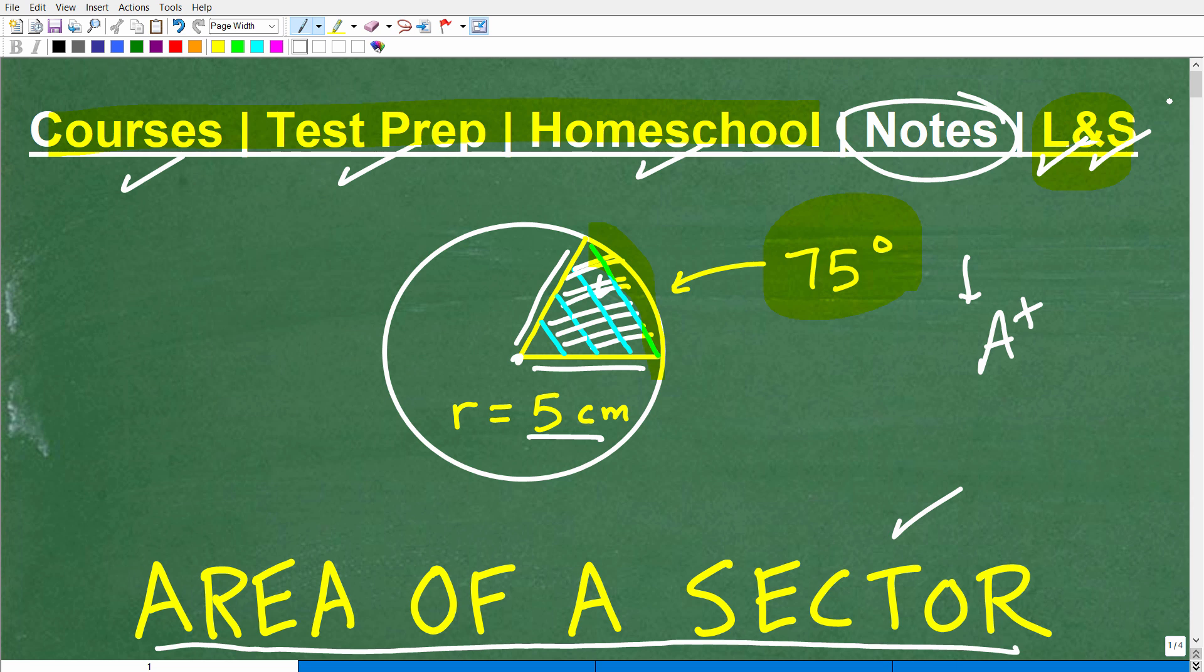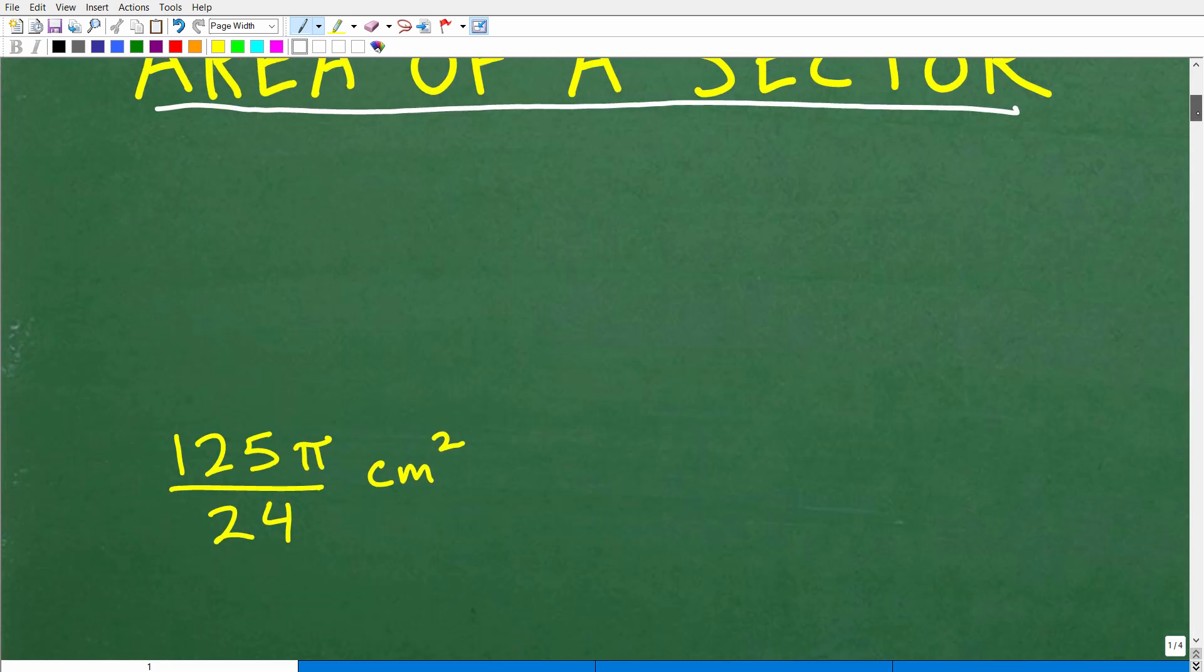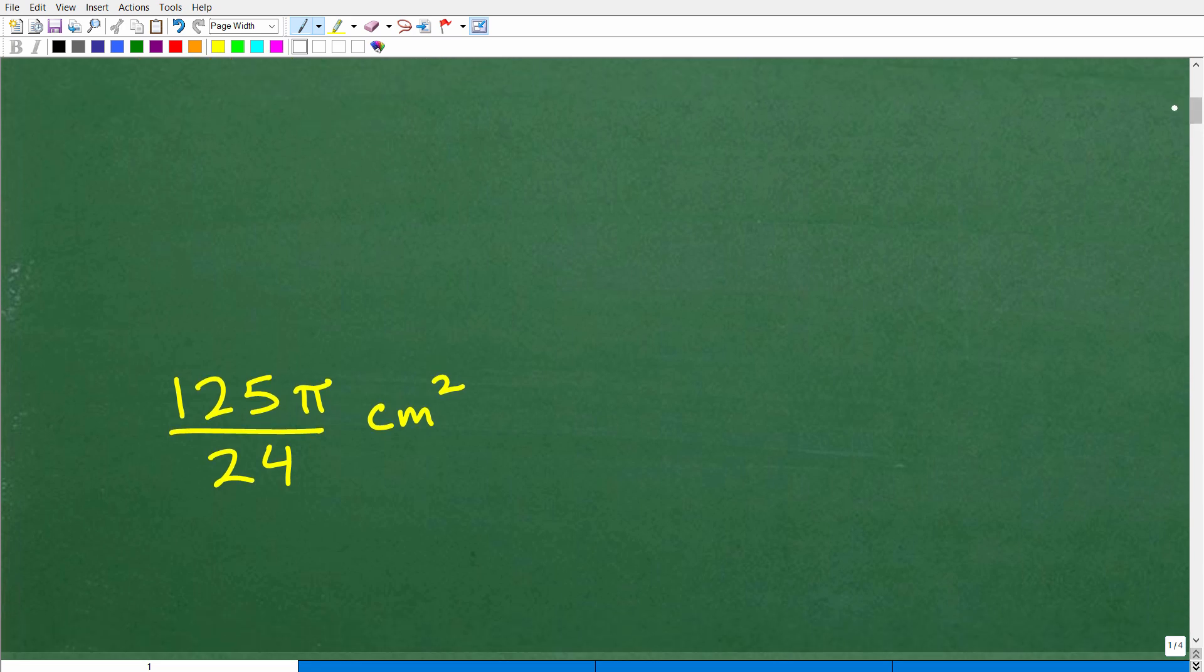Okay so let's take a look at this answer here. We want to find the area of this little pizza slice, which we refer to as a sector of a circle. And of course this arc is 75 degrees, the radius is 5 centimeters. So what is the answer? Well here it is. This is what we would call an exact answer. We have 125π over 24 centimeters squared. That is the area of that particular sector we just looked at.